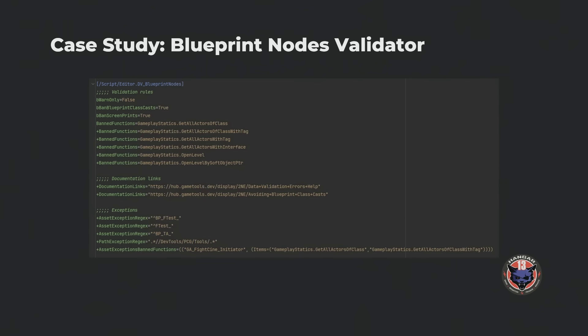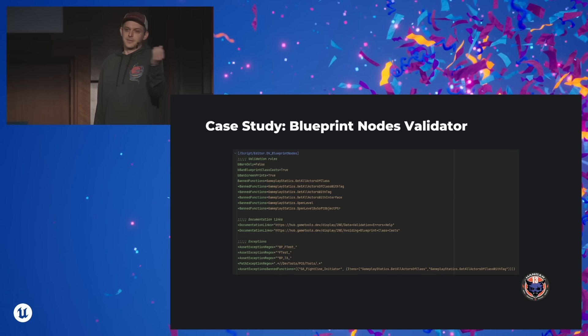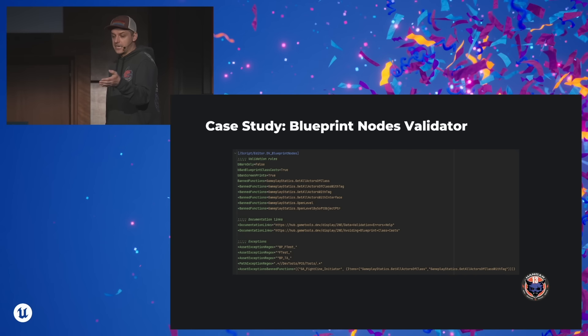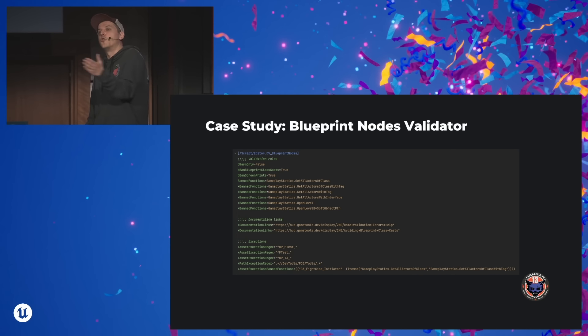Here's an example from an INI from the settings. You want to offer a fuller system when you do this validation. You have at the top the actual nodes you want to validate against — it's data-driven. Then you have a couple of documentation links. And as everything in life, you want to offer some exceptions. Maybe certain blueprints are exempt — for example, all functional tests are exempt from this validation because they don't go into runtime. So it's still a powerful mechanism, even with exceptions.